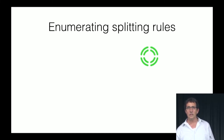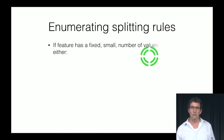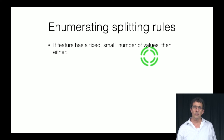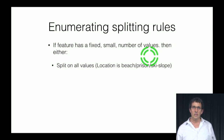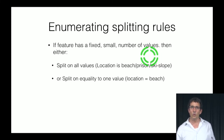How do we enumerate splitting rules? It depends on what the features are like. If the features have a fixed small number of values, then you can either split on all of these values — like the location is beach, or prison, or ski slope — or we can split on equality or inequality.